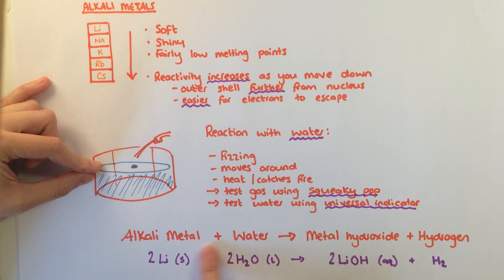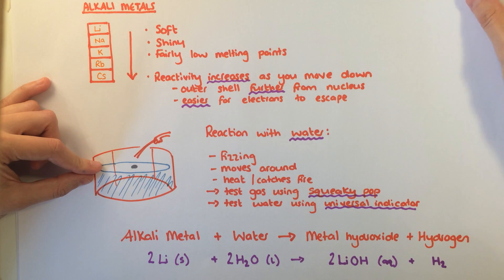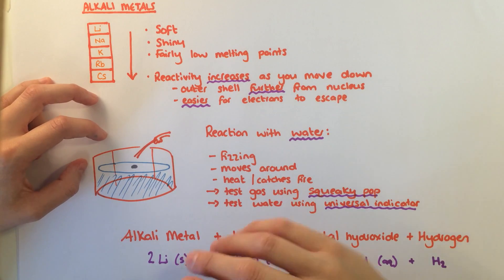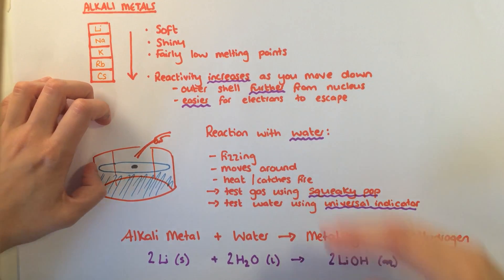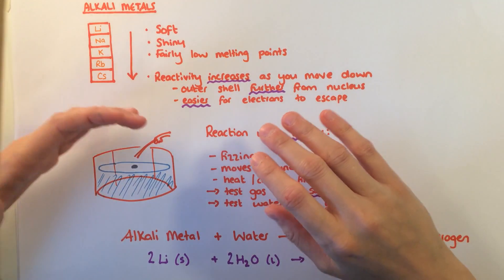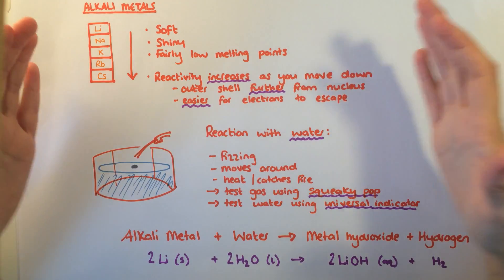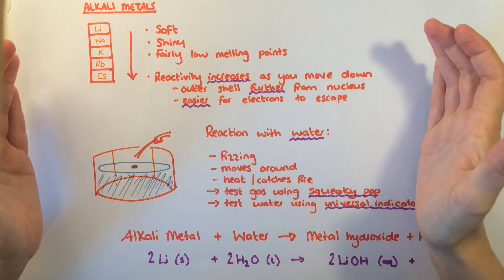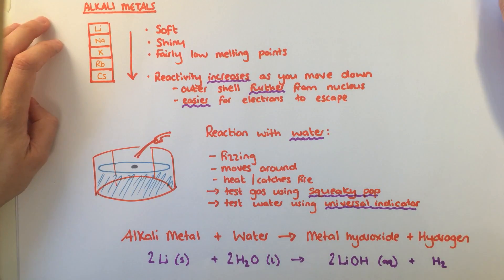An alkali metal reacts with water to give a metal hydroxide — that's the alkaline part — plus hydrogen. For example, lithium plus water gives lithium hydroxide plus hydrogen gas. All alkali metals are reactive because they only need to lose one electron from their outer shell. As you move down the group, the metals become more reactive because the atoms become bigger with more shells, so the electrons in the outer shell are further away from the nucleus, meaning there's less attraction and they can escape more easily.